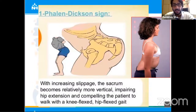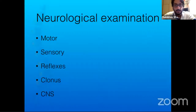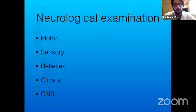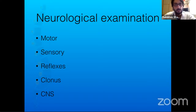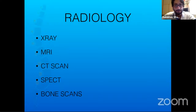Children with spondylolisthesis commonly present walking with flexed hips and knees — when you see a child like this, they need further investigation. A thorough neurological examination cannot be overemphasized, especially in children with Pott's spine where pus is compressing the spinal cord. The first signs are exaggerated reflexes and clonus. Thorough neurological examination is as important as the patient's history.